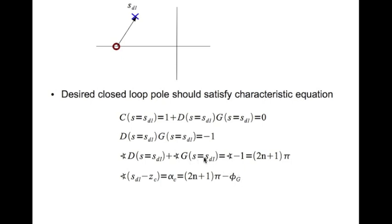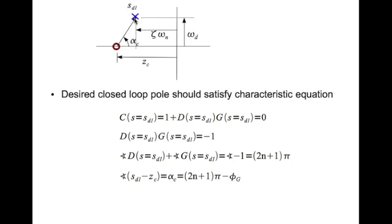Geometrically, alpha_c is the angle that the vector from zc to s_d1 makes with the positive real axis. The real part of the desired closed loop pole is zeta*omega_n = 0.8, and the imaginary part is omega_d = 2. Therefore, we can write zc as zeta*omega_n plus omega_d divided by tan(alpha_c).